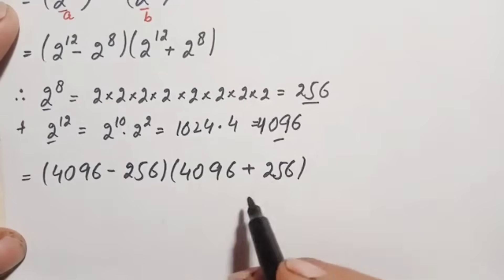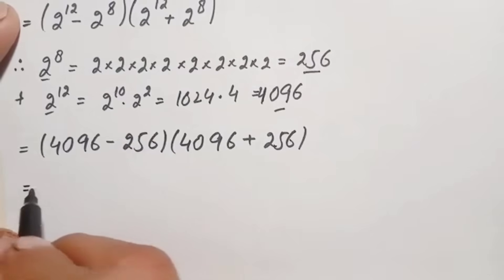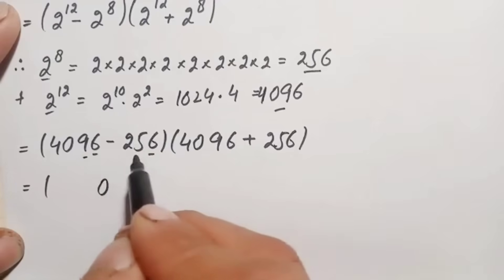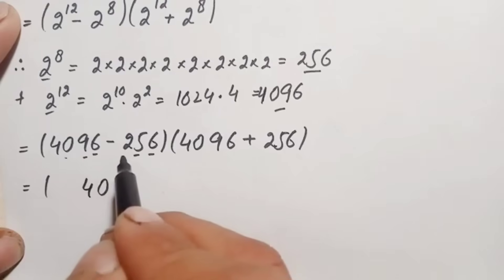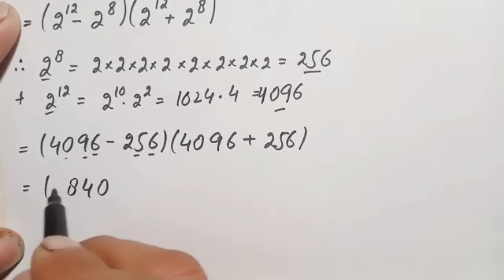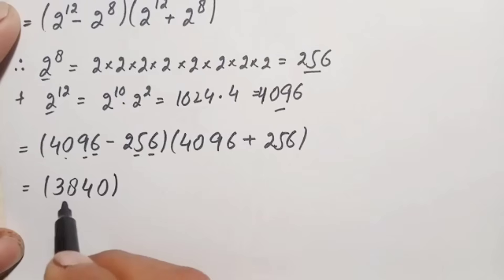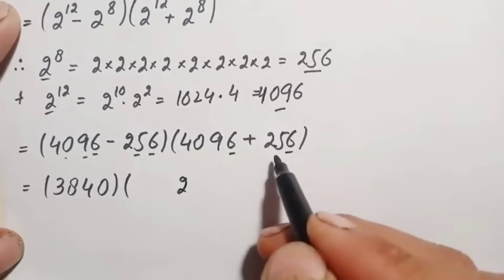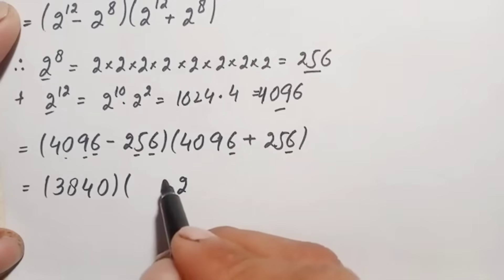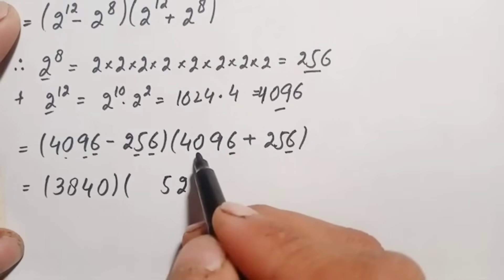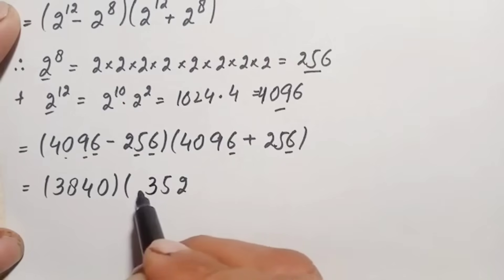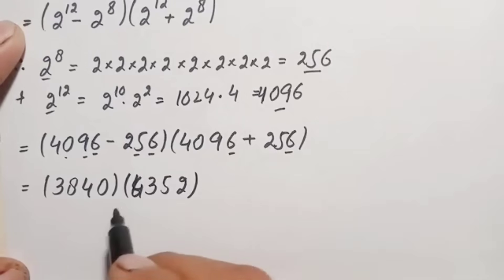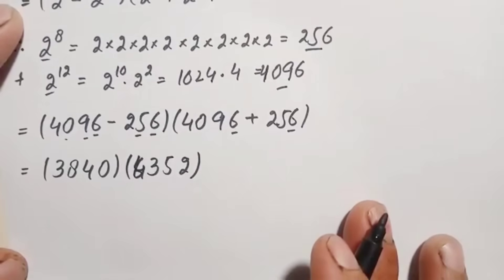We subtract: 4096 − 256. Working through: 6−0=6 (ones), 9−5=4 (tens — wait, borrowing needed), giving 3840. Then we add: 4096 + 256. Working through: 6+6=12 (carry 1), 9+5+1=15 (carry 1), 0+2+1=3, 4+0=4 — giving 4352. So the expression becomes 3840 × 4352.